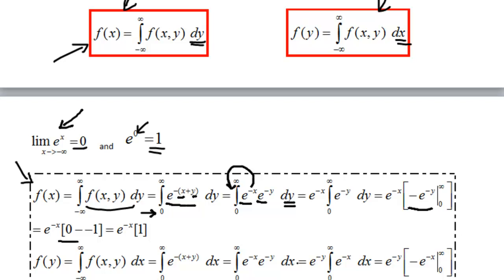And then what happens when we substitute the lower limit of integration into this expression? Well, it will be 1. Okay, it will become 1. So, we recovered our first marginal density function.